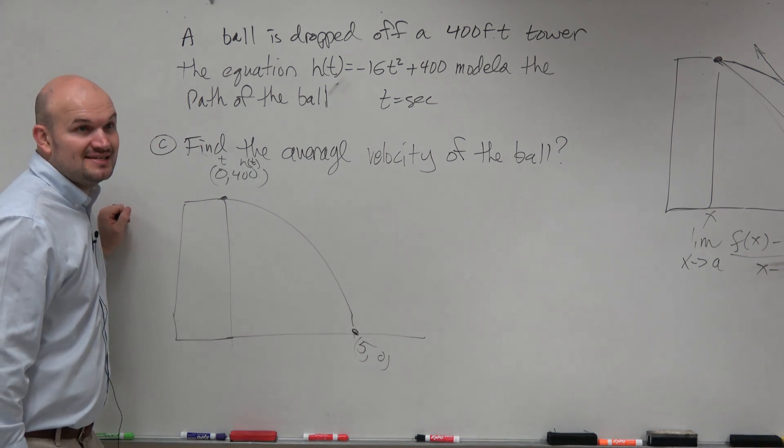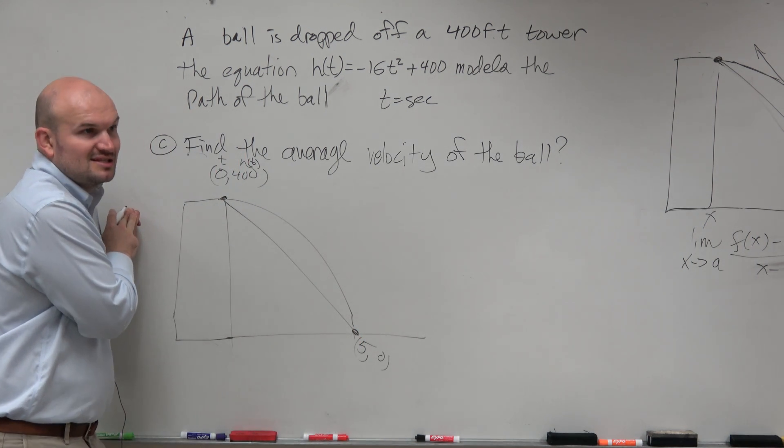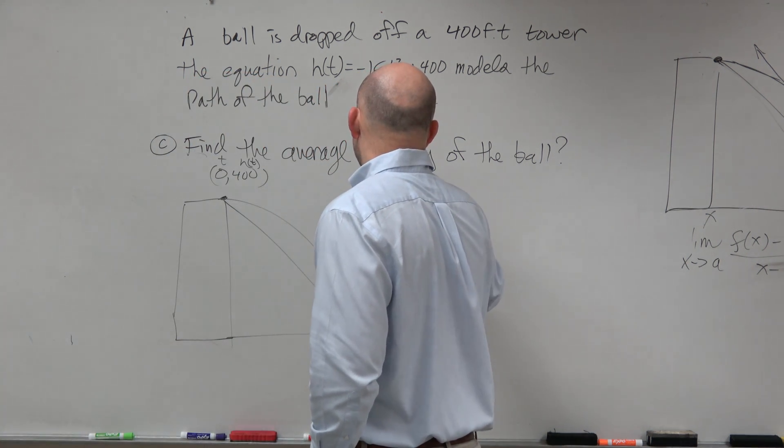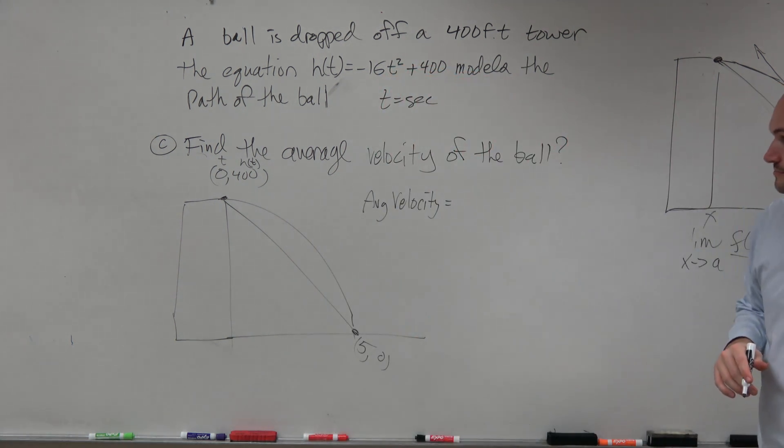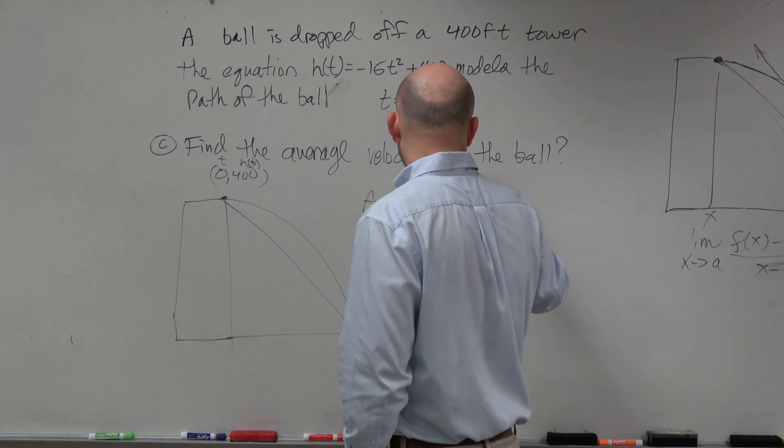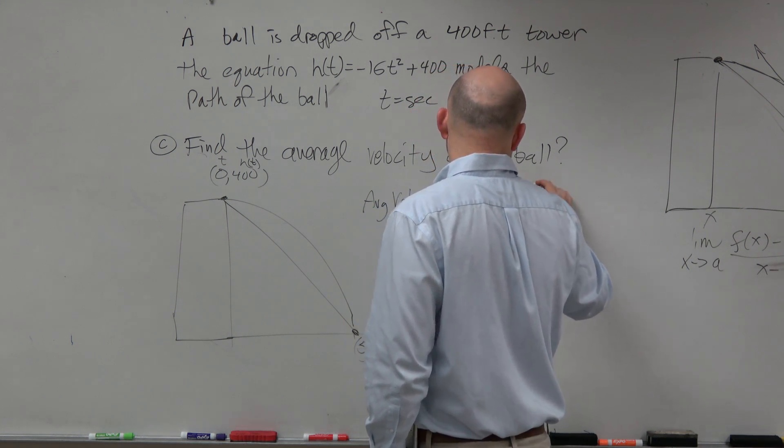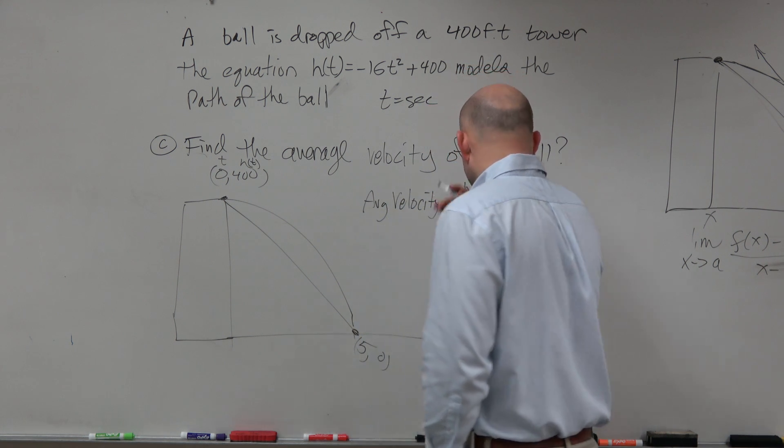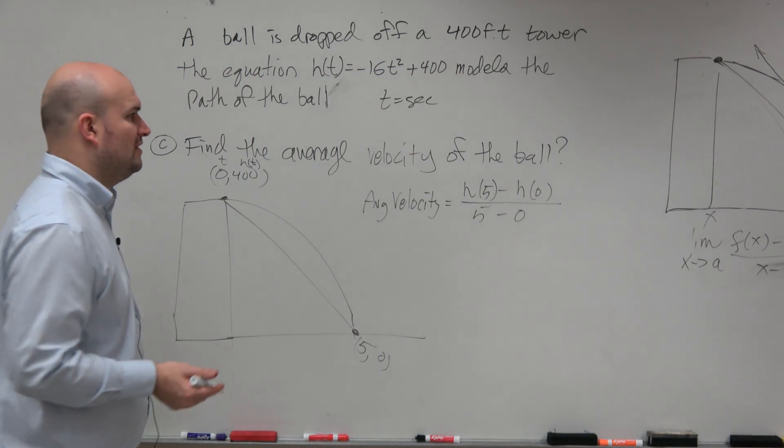So if I want to find the average velocity, guys, I'm not looking for instantaneous velocity, I'm just looking for what is the slope really of that line. So average velocity is just going to be the change in our height. So we're just going to say h of 5 minus h of 0 all over 5 minus 0. Change in the distance over the change in time. And that's going to be our velocity.